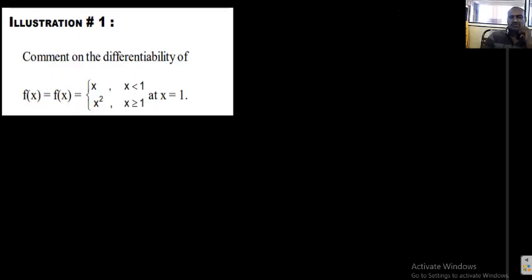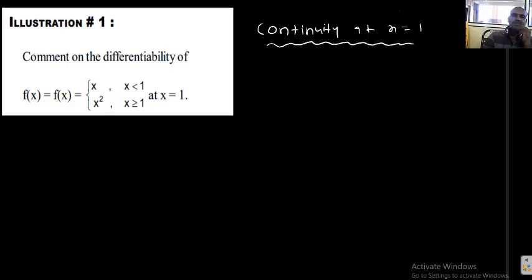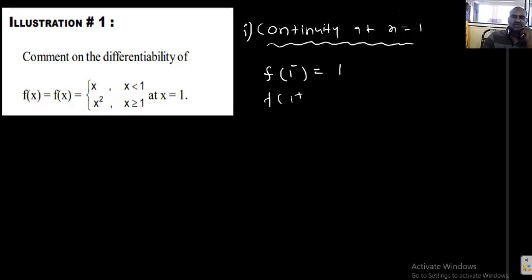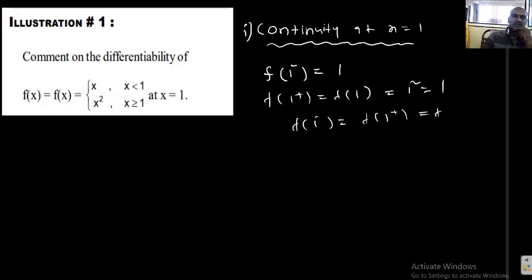Another example problem. Check differentiability at x equal to 1. The difficulty of this chapter is that you want to check continuity first, then check differentiability. Find f of 1 minus — using the rule at 1 minus, put x equal to 1 to get f of 1. F of 1 plus and f of 1 both give 1 square equal to 1. So f of 1 minus equal to f of 1 plus equal to f of 1. Therefore, f is continuous at x equal to 1.